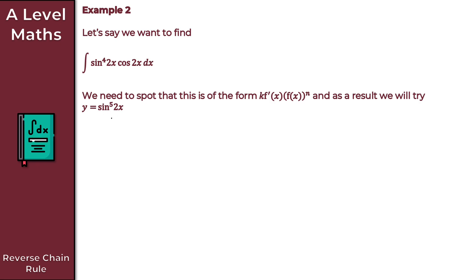Just in case you're not sure where this comes from: sine to the 4 of 2x is f of x to the n — that's f of x to the n. My n here is a half because we're dealing with that power. When the integrand is of this form, we try y equals f of x to the n plus 1. So adding 1 to the power gives us sine to the 5 of 2x.